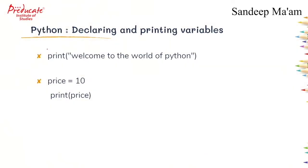So this is the program. The first one is the print statement — whatever we write within double quotes and within the parenthesis will be directly printed on the screen. So if we want to print any text on a particular screen, we use print with double quotes.